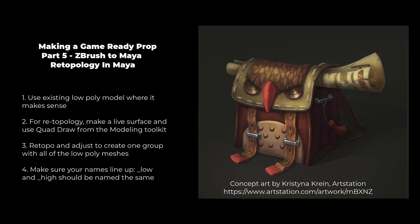Hey class! For this part we are going from ZBrush to Maya and we're going to retopologize our decimated model in Maya. There are a few steps. Basically we want to use our existing low poly model that I made in Maya before wherever it makes sense. Then for models that had more complicated or more drastic changes in ZBrush, I'm going to show you how to retopologize that. First we'll make a live surface and then use Quad Draw from the modeling toolkit. Let's get started.